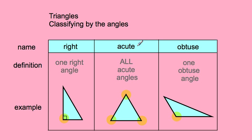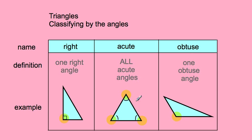The second type is an acute triangle. That's when all of the angles are acute. This angle here is an acute angle, this angle is an acute angle, and this angle is an acute angle. So all of the angles are acute, and therefore this is an acute triangle.